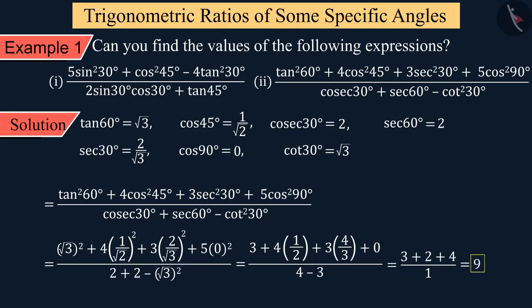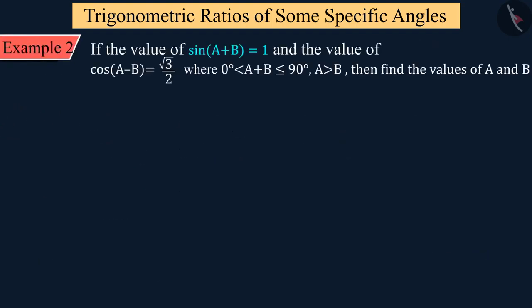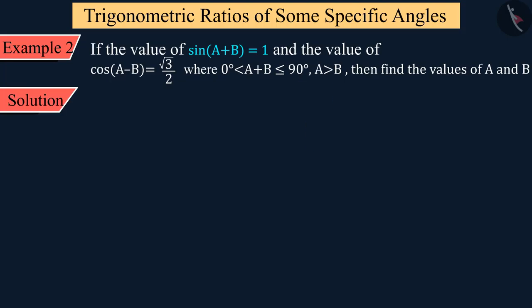Let us see another example. If the value of sin(A + B) is 1 and the value of cos(A − B) is √3/2, where (A + B) is greater than 0° and less than or equal to 90°, and A is greater than B, then what will be the values of A and B? Let's solve it.